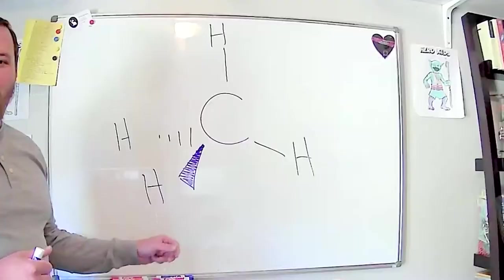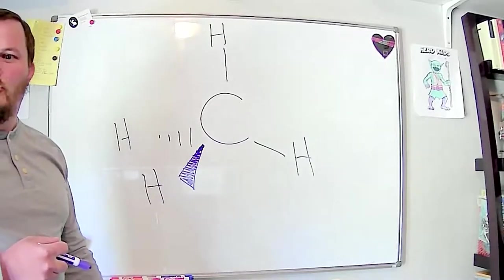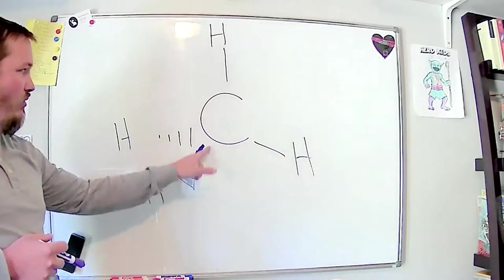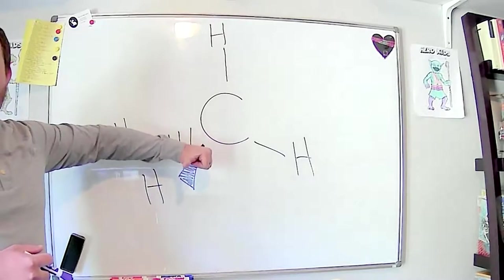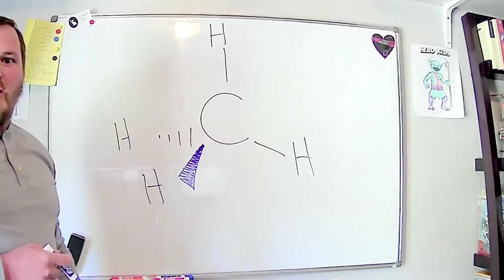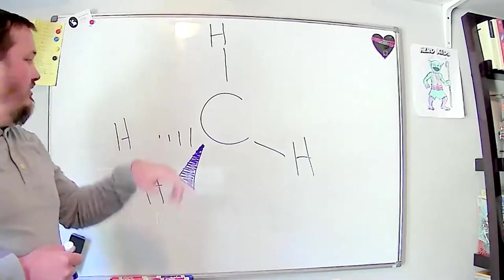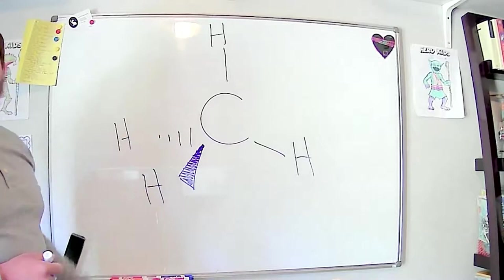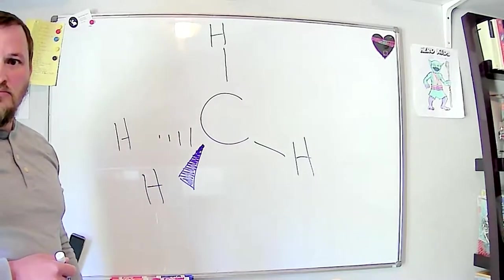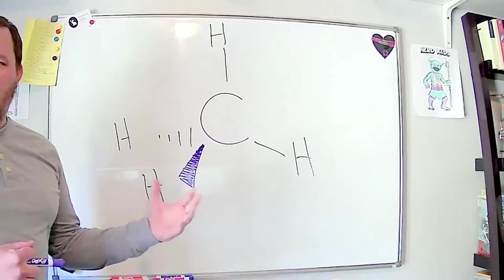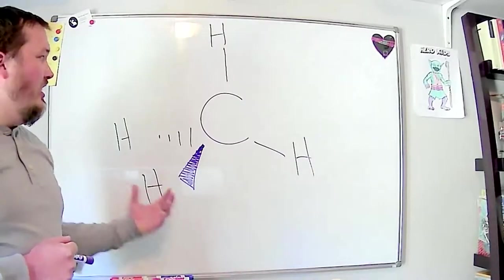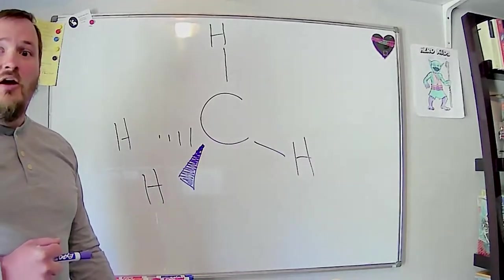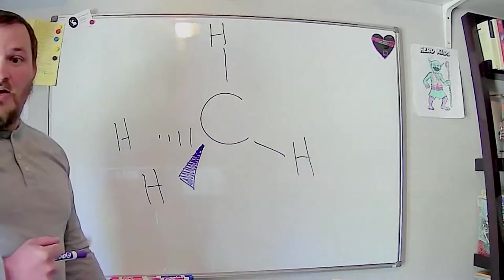To clarify the wedge: if you use your imagination, it looks kind of like a toothpick pointing out toward you. So the wedge is pointing out towards you. There are various ways of doing this on a computer to make these look perfect, but you're not always going to have a computer. For now, it's probably more useful to just know how to draw it by hand, since we're already good at taking pictures and submitting things as PDFs.